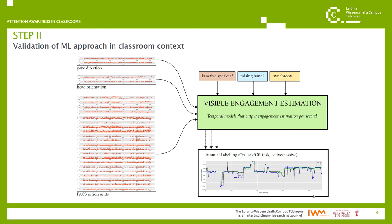This is a figure of the workflow that we are using to analyze our data. Similarly as in the first study, we use gaze direction, head orientation, and facial action units, and also classroom synchrony again, to estimate students' attention. This time, we are enriching our approach by including information on raising hands and the active speaker additionally. Please note that this is ongoing work and we did not have any results ready to present by the time this presentation was created.